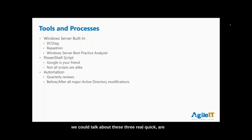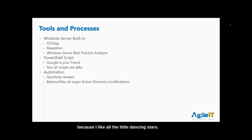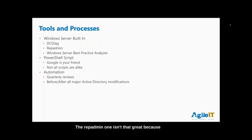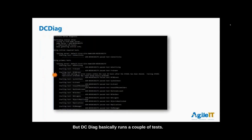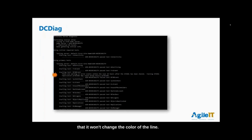A lot of the built-in tools are fundamental parts of this because they tell you a lot of what's there. There's Repadmin — I prefer the UI version — but if you just run the command line it hits your domain controllers. DC Diag runs a couple of tests, as you can see on screen here — it tells you whether each test passed or failed.